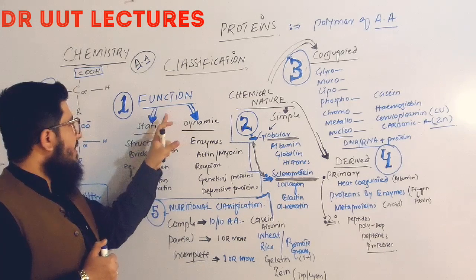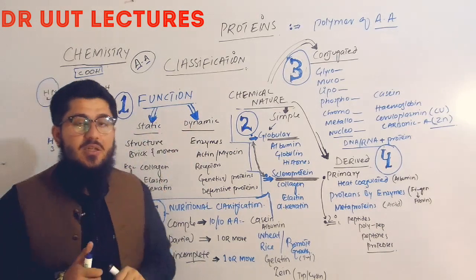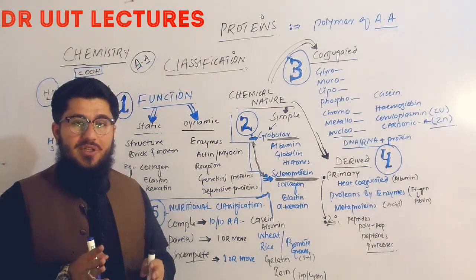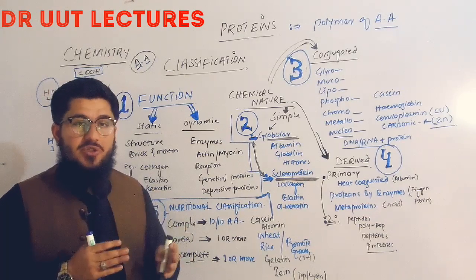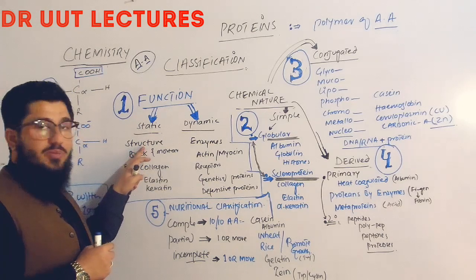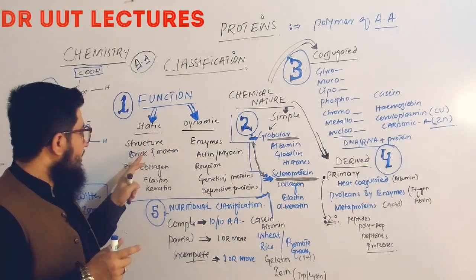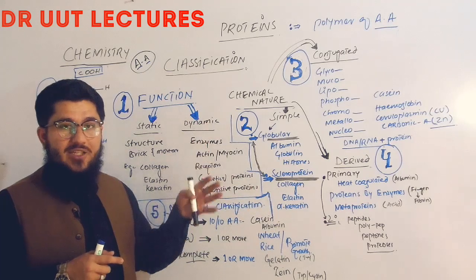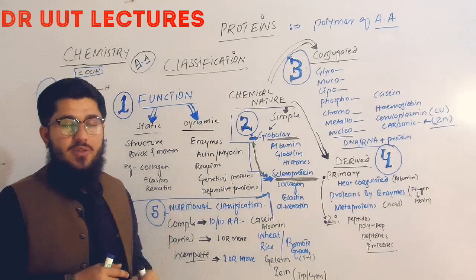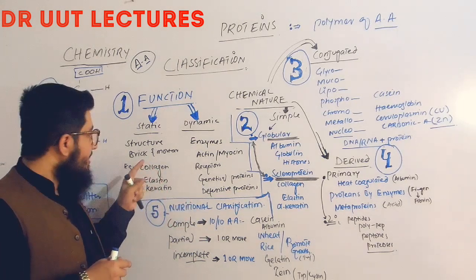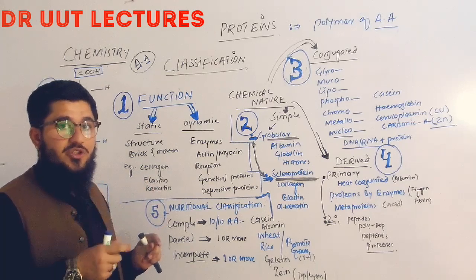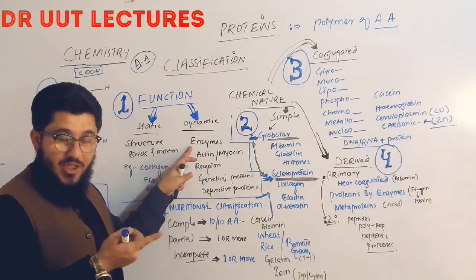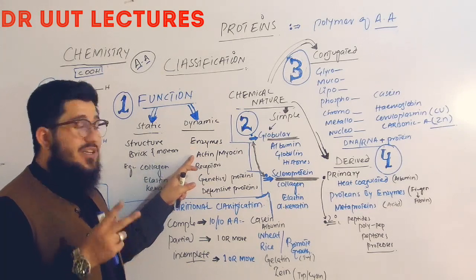On the basis of function, proteins are further classified into static and dynamic. Static refers to structural proteins — proteins that help in structure formation, playing the role of brick and mortar in building. In the human body, collagen, elastin, and keratin provide structural and standing support. Dynamic proteins include enzymes, which perform several functions in the body, and actin and myosin, which help us in motion.